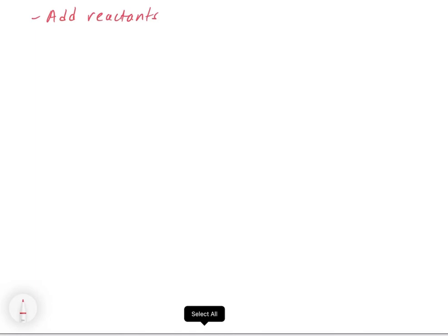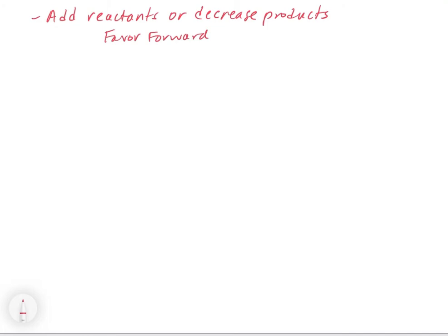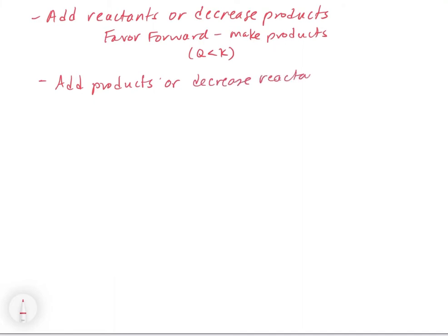We can generalize this with some general rules. If we add reactants or decrease products, we're going to favor the forward direction and make products — this is the case where Q is less than K. If we add products or decrease reactants, we're going to favor the reverse direction and make reactants — this is the case where Q is greater than K.